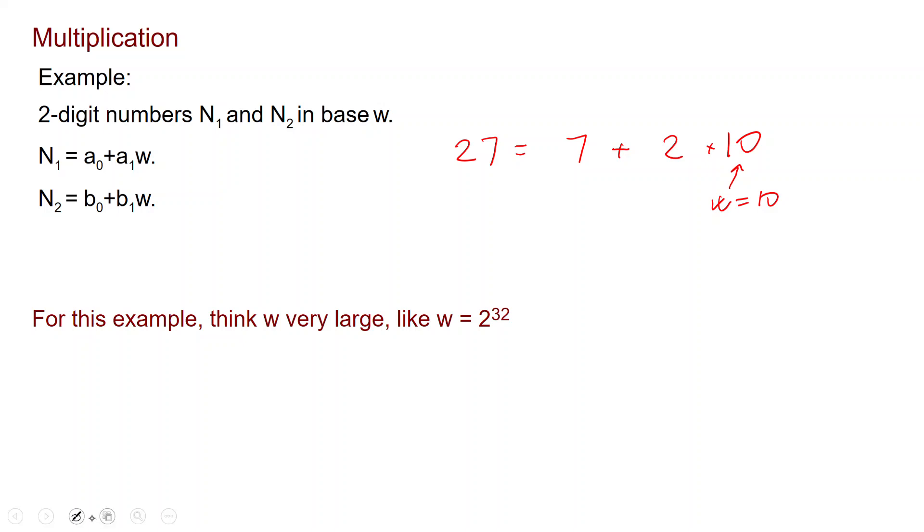But here we are working with a different base which, for this example, you should think of it being very large, something like W being 32 or more. So we want to multiply these two numbers.